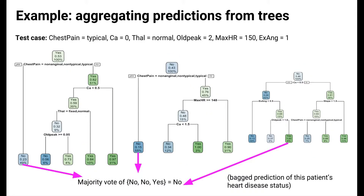Now let's look at a classification example using the heart disease dataset. The test case is a specific patient, and I bootstrapped the training set three times to build three trees. The leftmost tree predicts no heart disease, the second tree also predicts no, but the third tree predicts yes. To combine these predictions into a single bagged prediction, we take the majority vote. In this case, the majority vote is no — so our bagged prediction is no heart disease for this patient.